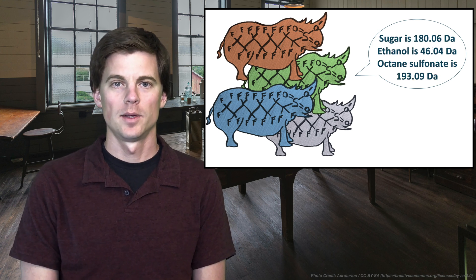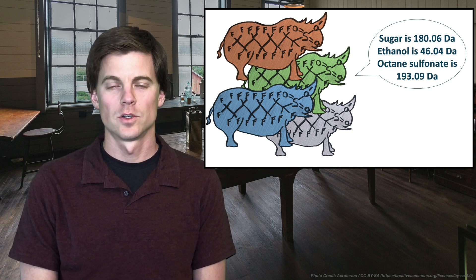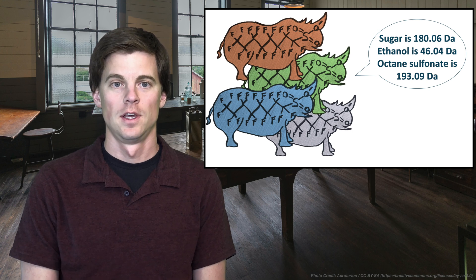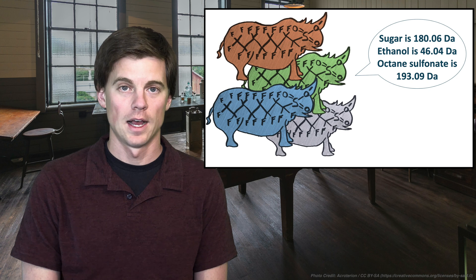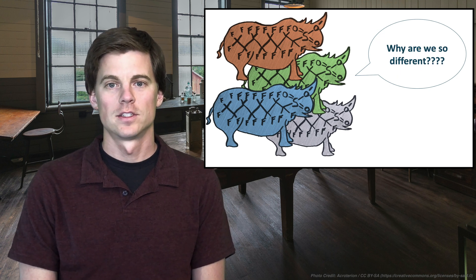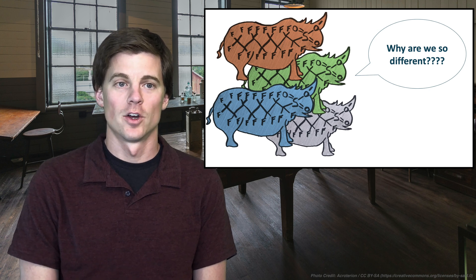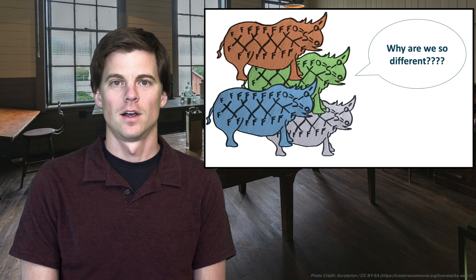So sugar, 180.06. Ethanol, 46.04. And then octane sulfonate, which would be the non-fluorinated version of these PFAS compounds, 193.09. Notice that none of them have a 0.9 mass. So why are they so different? And the clue here is that they are not natural compounds. So we're going to figure out what makes their mass different.